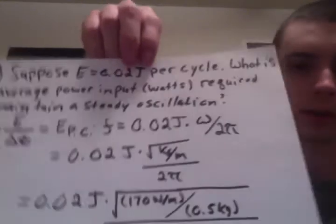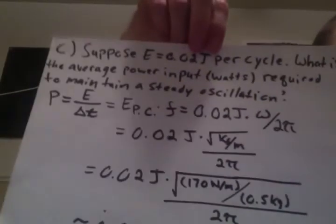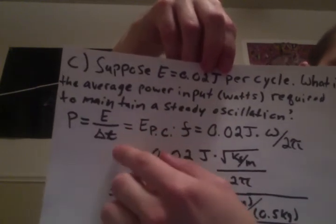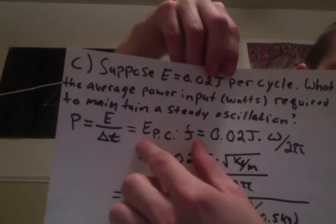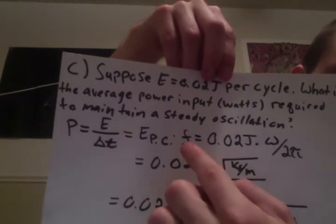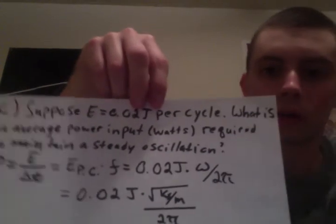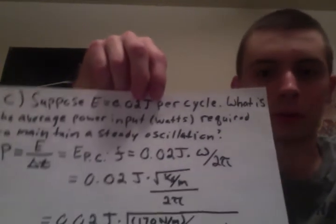We know that power equals the energy over the displacement in time, and we can rewrite that as the energy per cycle times the frequency. We eventually want to get this answer in watts, so we'll have to do a little bit of revision in this case.